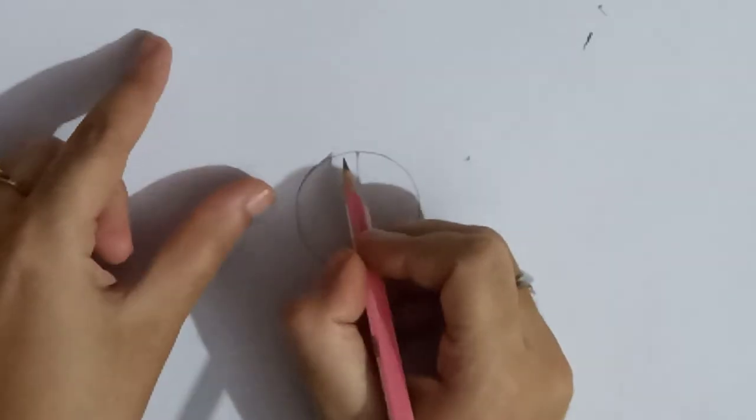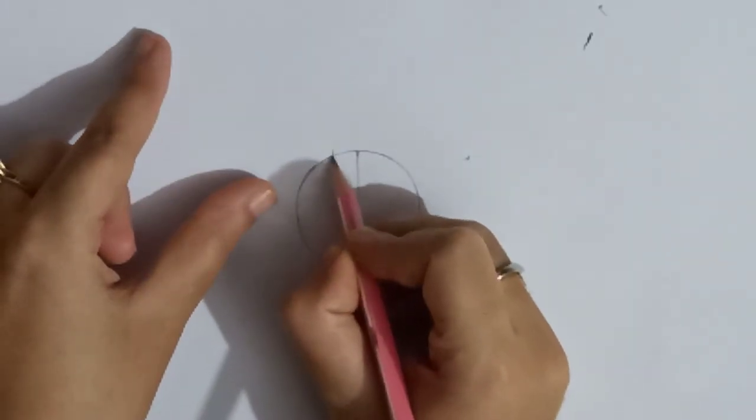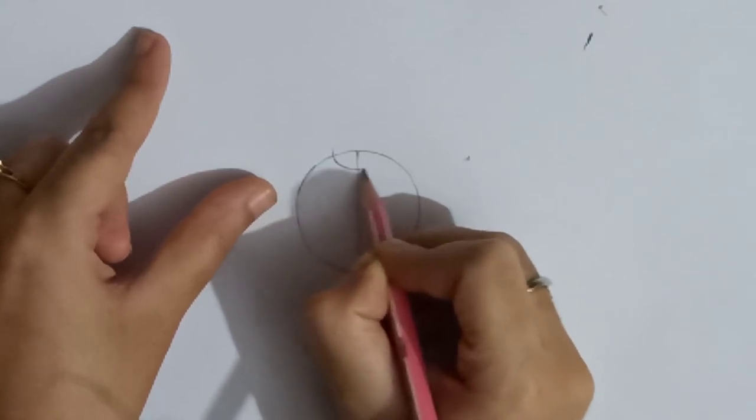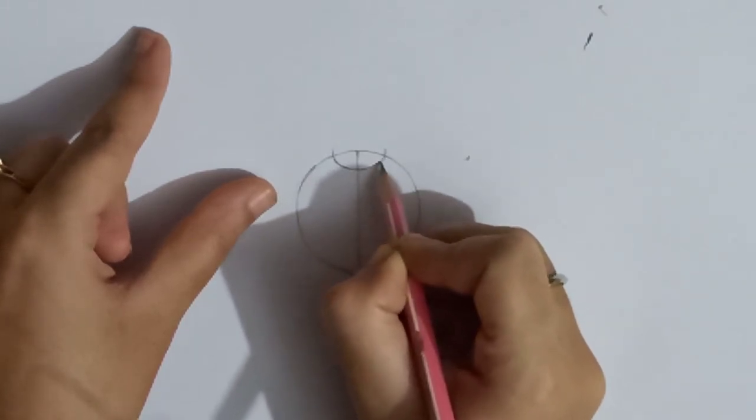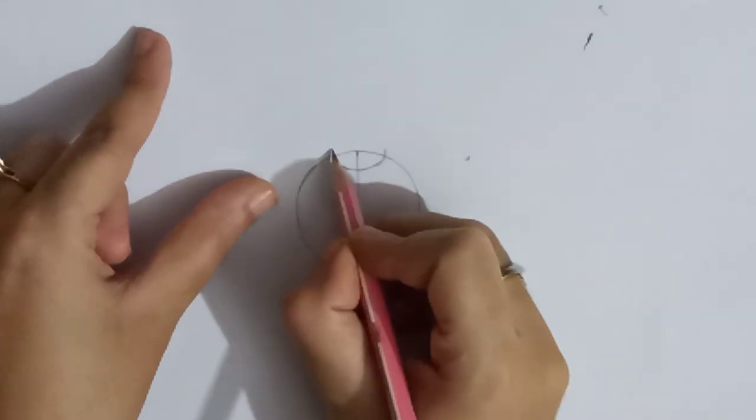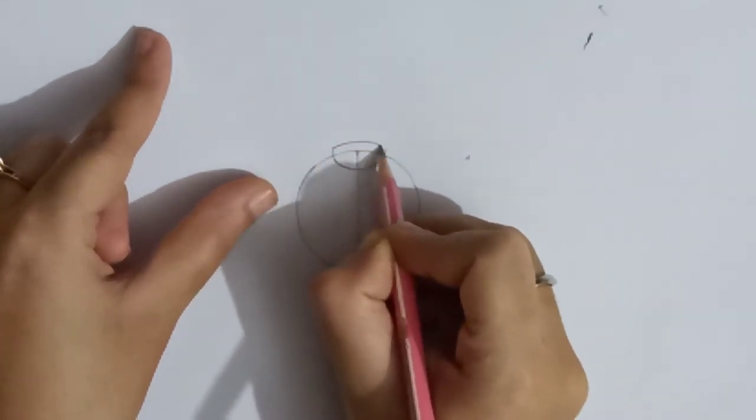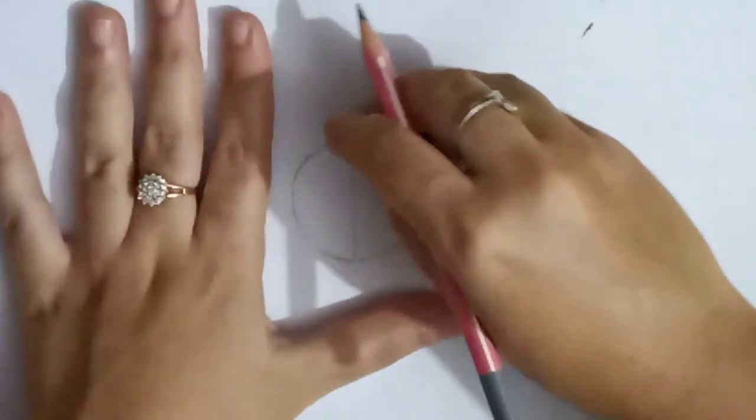For the mouth, we draw a big U at the top. Join the ends with a curve and clean this up.